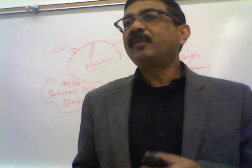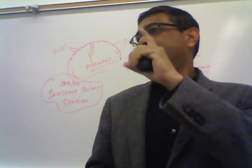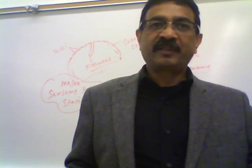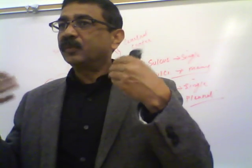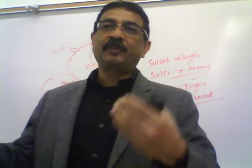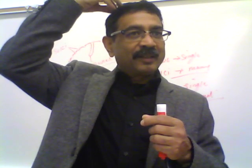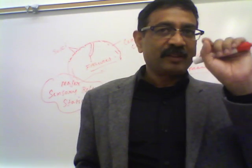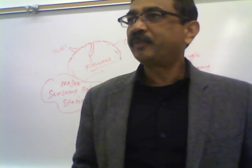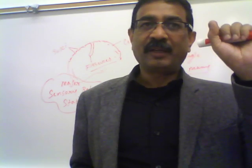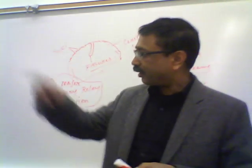Broca's area is named after a French neurologist who first identified it. He had a patient who had difficulty producing speech for many years. After the patient's death, he studied the brain under a microscope and found that only that area had a lesion. He first reported that this area is responsible for speech production, and other physicians confirmed it later.